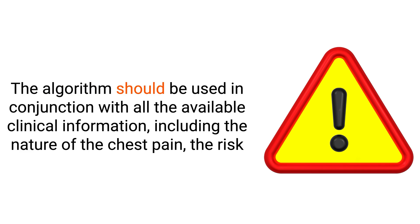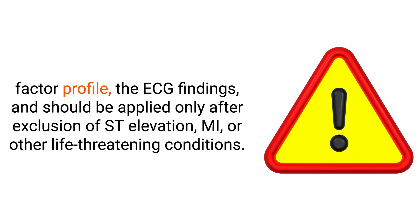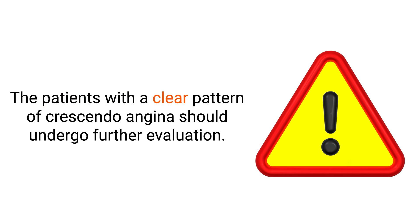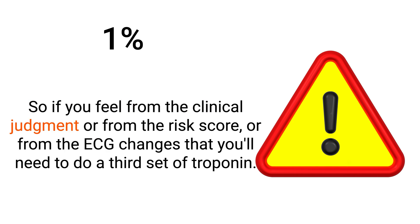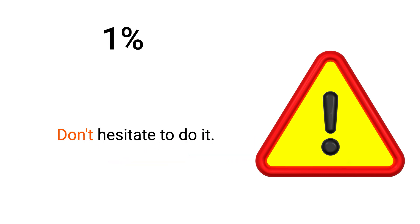This protocol is very useful, but keep in mind there are several caveats. The algorithm should be used in conjunction with all available clinical information, including the nature of the chest pain, the risk factor profile, the ECG findings, and should be applied only after exclusion of ST elevation MI or other life-threatening conditions. Patients with a clear pattern of crescendo angina should undergo further evaluation. The thresholds for rule-out were selected to allow a sensitivity and negative predictive value of 99%, which means that in 1% of patients there is still a late increase in troponin. So if clinical judgment, risk score, or ECG changes suggest it, don't hesitate to do a third set of troponin.